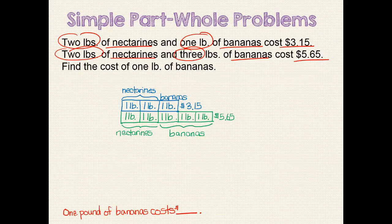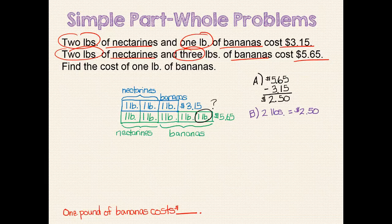Compare the two bars. Do you see that the only difference between the two bars is that the second model has two more pounds of bananas? That looks like a pretty obvious place to start our computation. First, we find the difference in cost between the two bars: $5.65 minus $3.15 equals $2.50. Since two pounds of bananas is $2.50, then one pound of bananas should cost $2.50 divided by 2, which is $1.25. One pound of bananas costs $1.25.